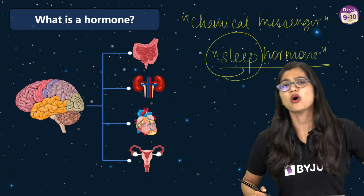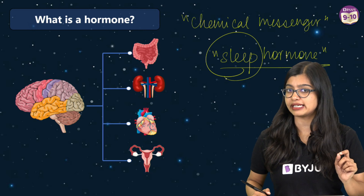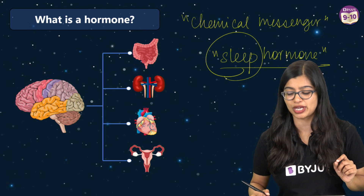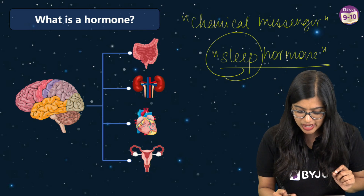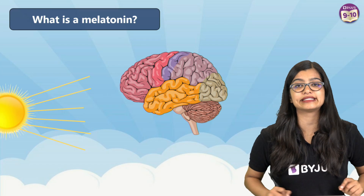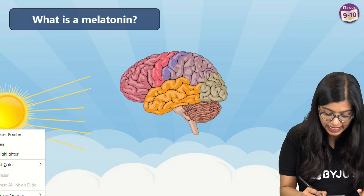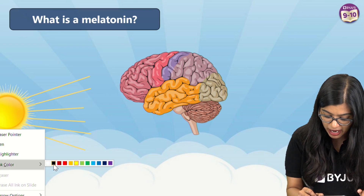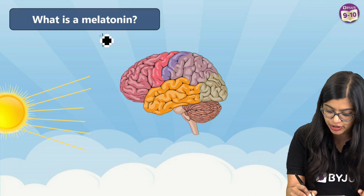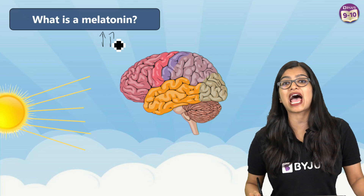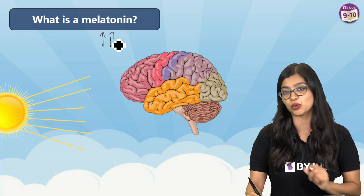How is this circadian rhythm maintained? That is what we need to find out today. This circadian rhythm is maintained by a hormone produced inside our body known as melatonin.